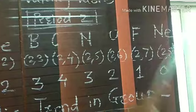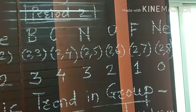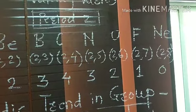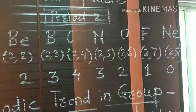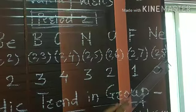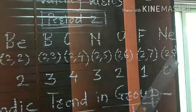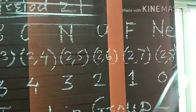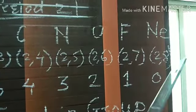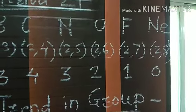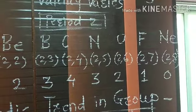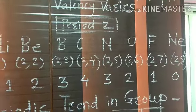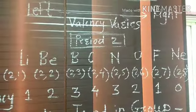The last element in period two is neon. The atomic number of neon is 10 and its electronic configuration is 2,8. In the last orbit of neon there are 8 electrons, meaning neon already completes its octet. So neon neither donates nor gains electrons, and the valency of neon is 0.